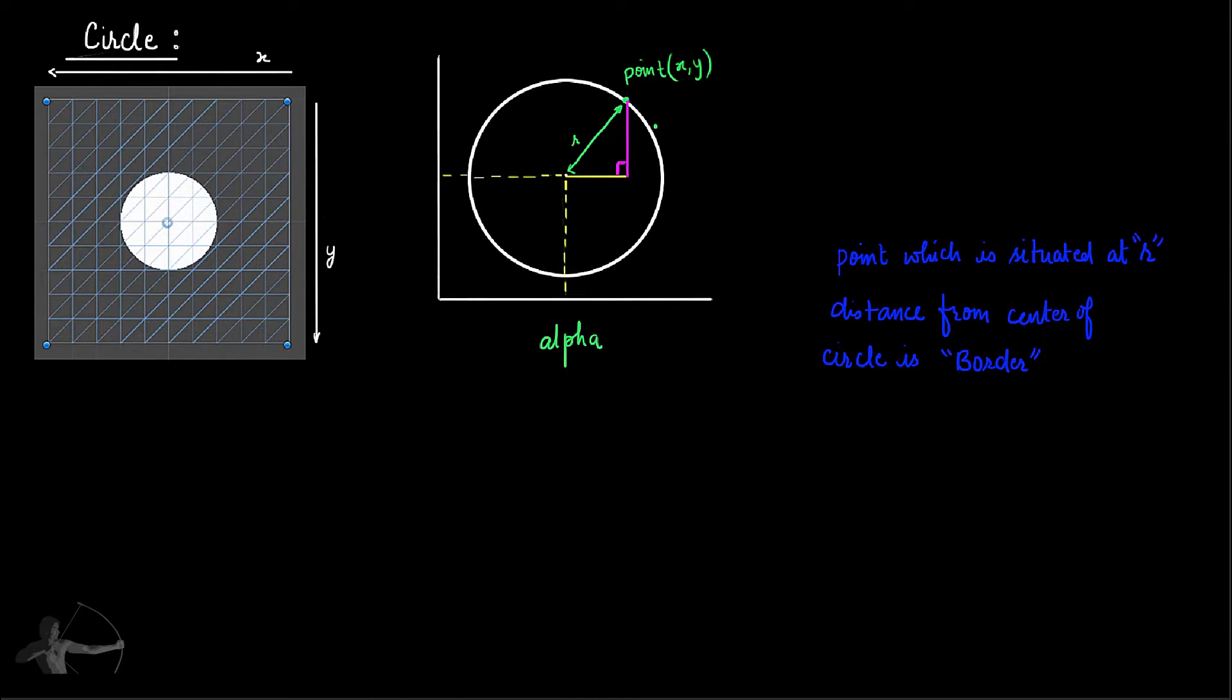So we know for a general graph this is the Y axis and this is the X axis. Let's call this point Y dash and this point X dash. Based on the Pythagorean theorem, R which is the radius is the hypotenuse of the triangle.